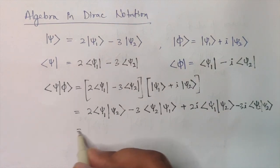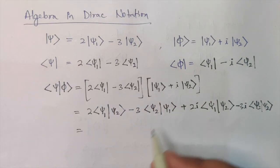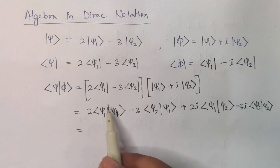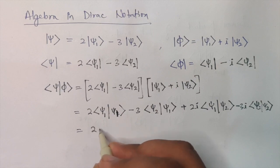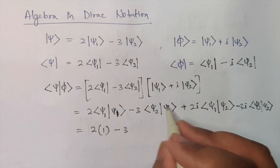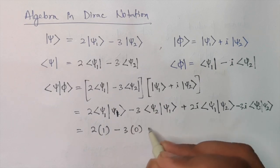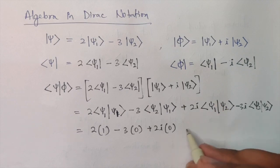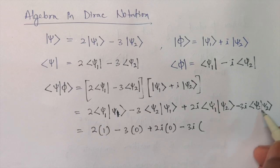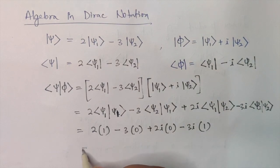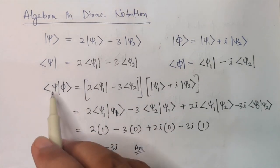Now applying the properties: bra-Psi-1 ket-Psi-1 follows the normalization condition and equals one. So we get 2×1 = 2. The term bra-Psi-2 ket-Psi-1 involves two different wave functions so by orthogonality it equals zero — minus 3×0 = 0. Then plus 2i times bra-Psi-1 ket-Psi-2 — again two different functions, so zero. And minus 3i times bra-Psi-2 ket-Psi-2 — by normalization equals one. So we get: 2 + 0 + 0 minus 3i, giving the inner product as 2 minus 3i.